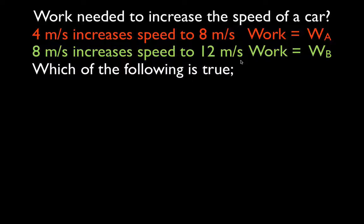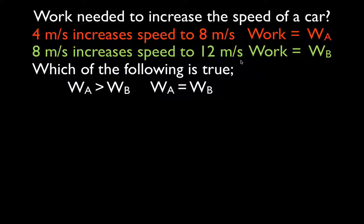The question we're trying to answer is: which of the following is true — work A is greater than work B, work A and B are equal, or work B is greater than work A? We've been given the velocities and we'll say the car has a mass of 500 kilograms — a nice round number.